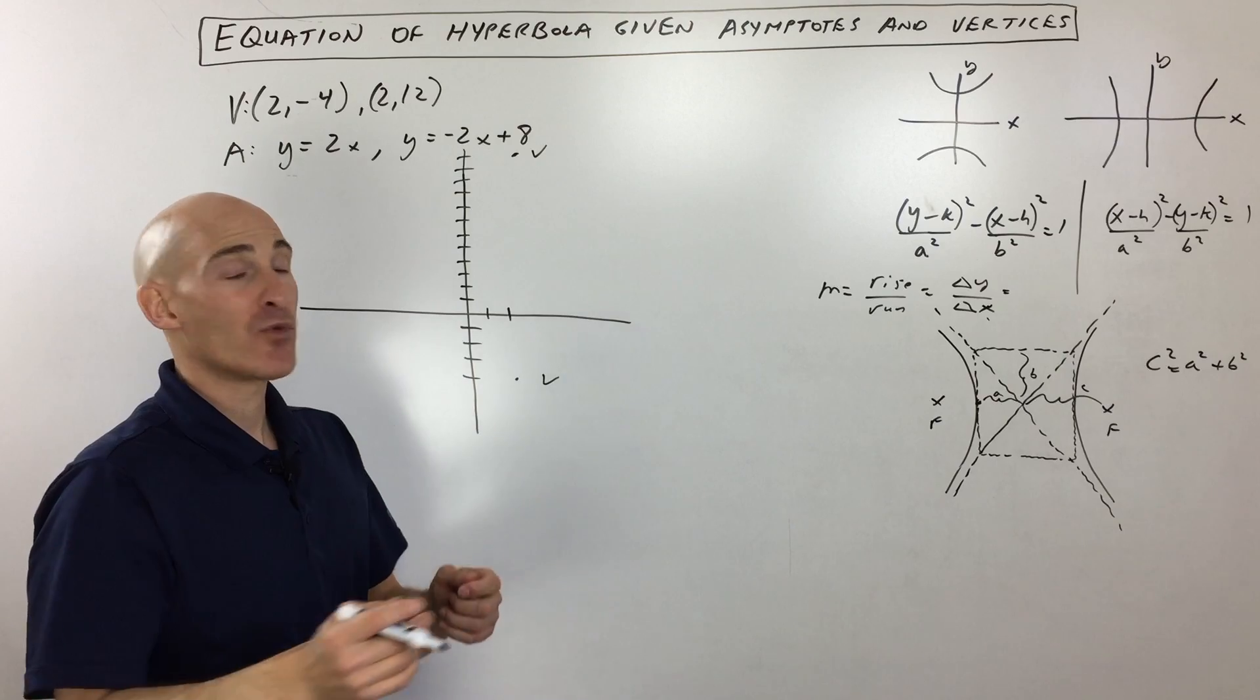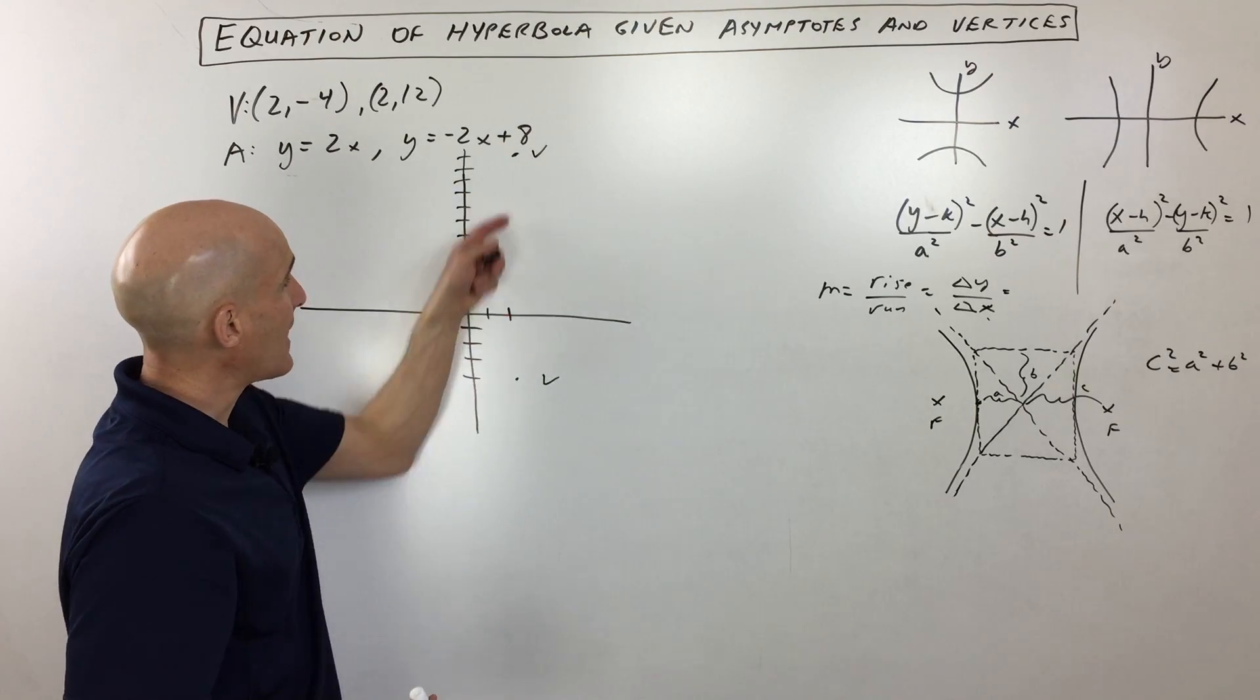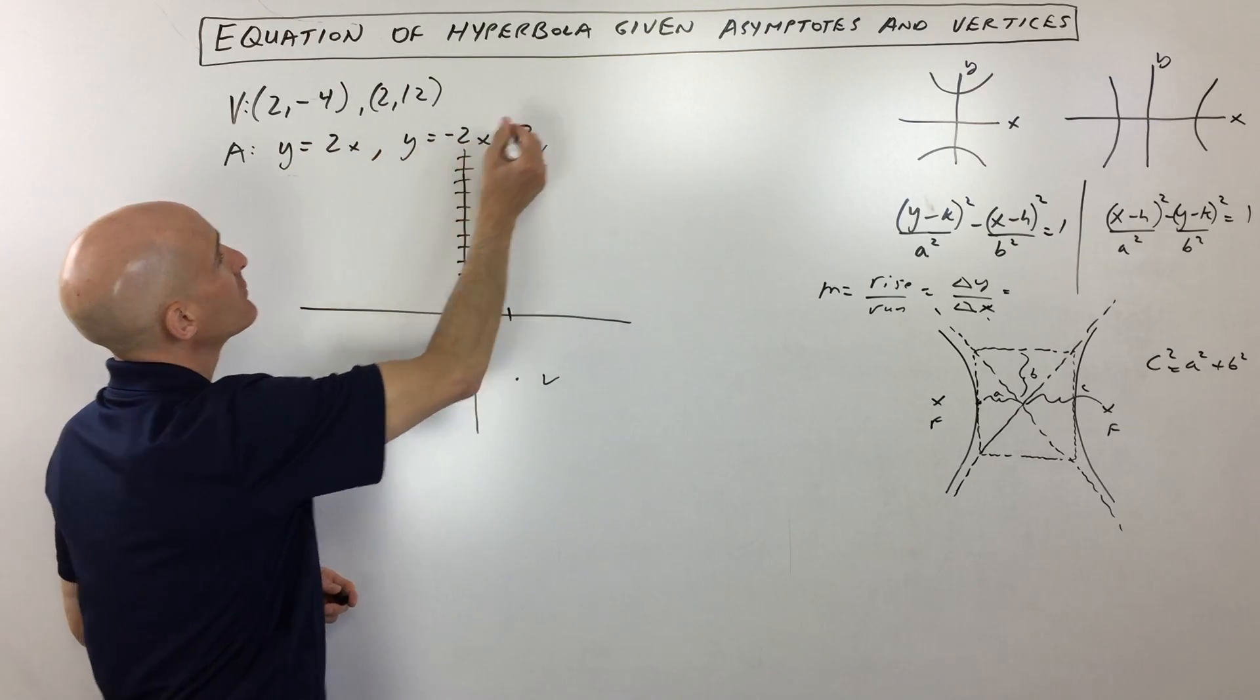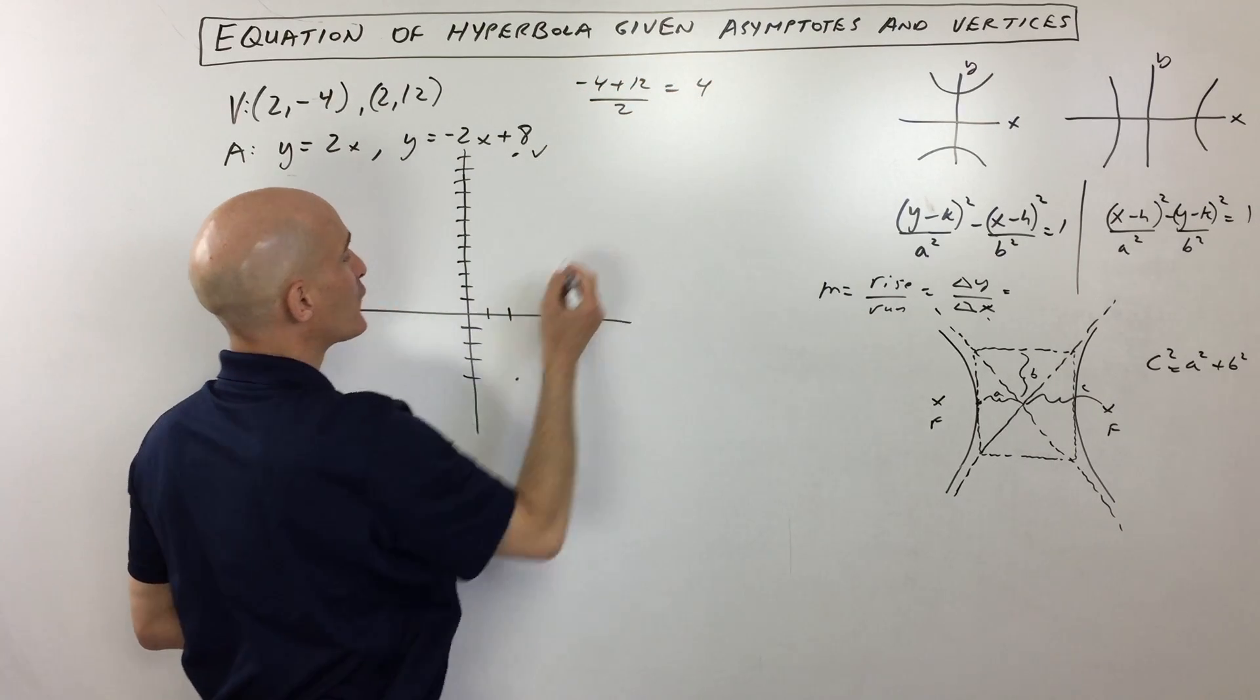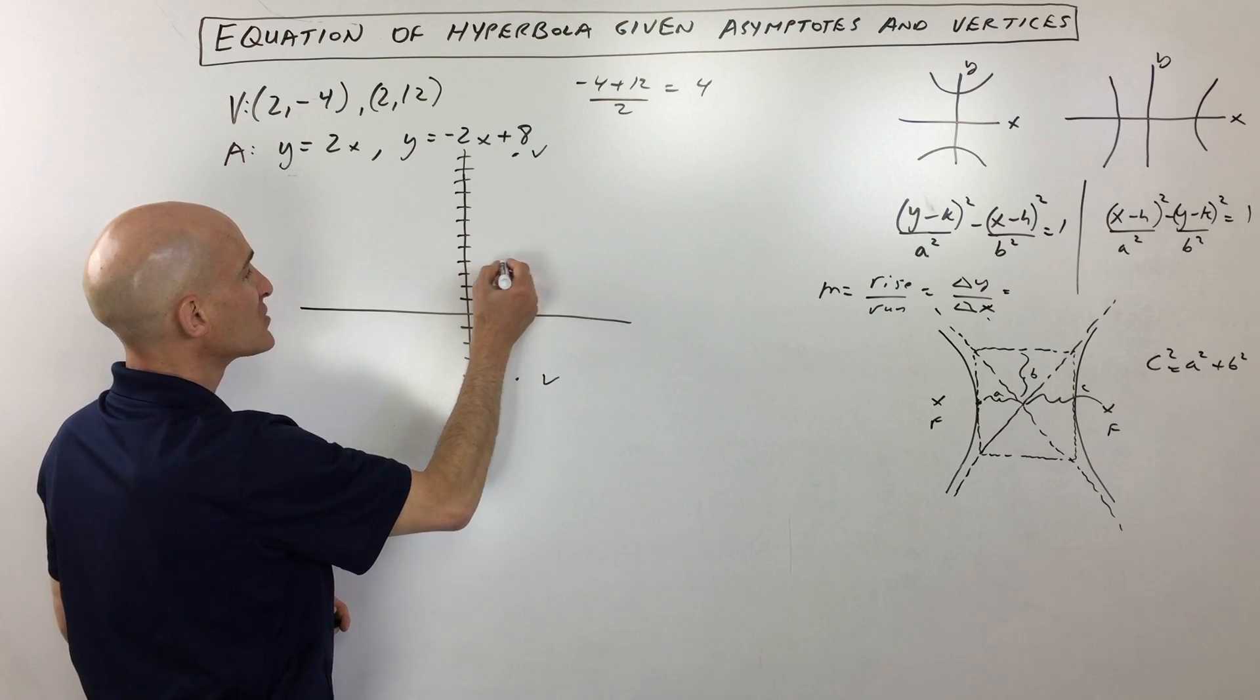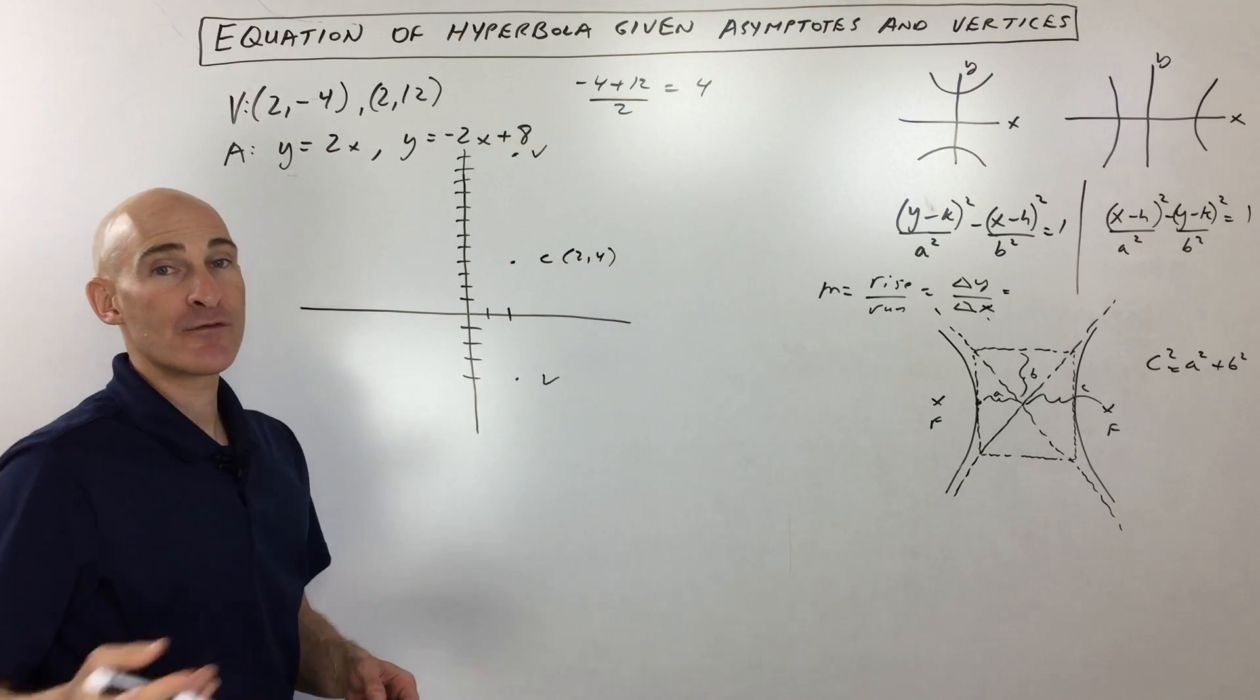And then the asymptotes are at y equals 2x and y equals negative 2x plus 8. First thing I want to do though is I want to find the center point, and the center point is going to be halfway in between those vertices. So we can either count and find the midpoint or you can take -4 plus 12, add those together and divide by 2. So that's going to come out to 4, so we're really over here at (2, 4), which is going to be right there. There's our center (2, 4).